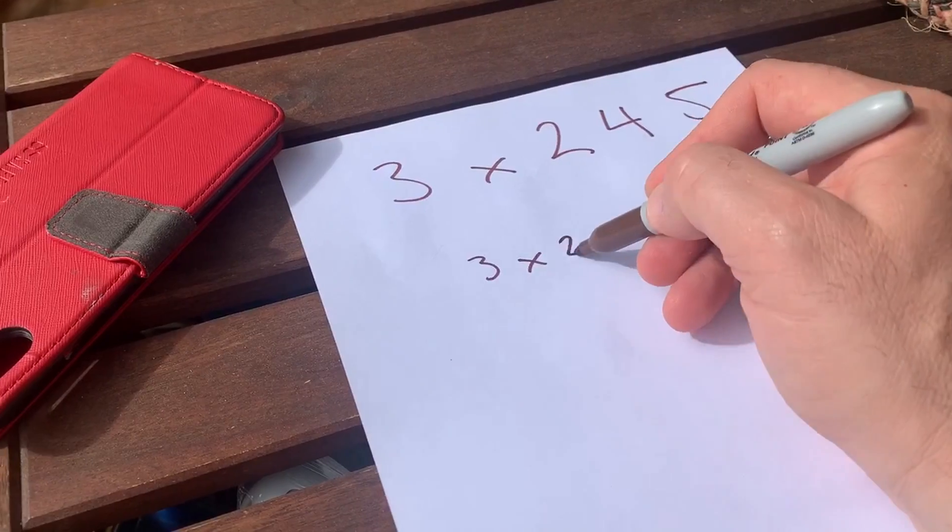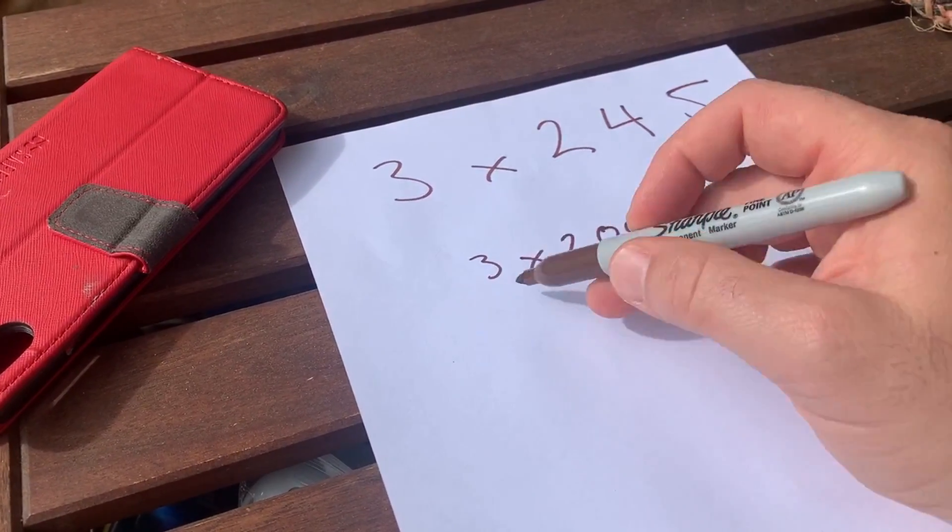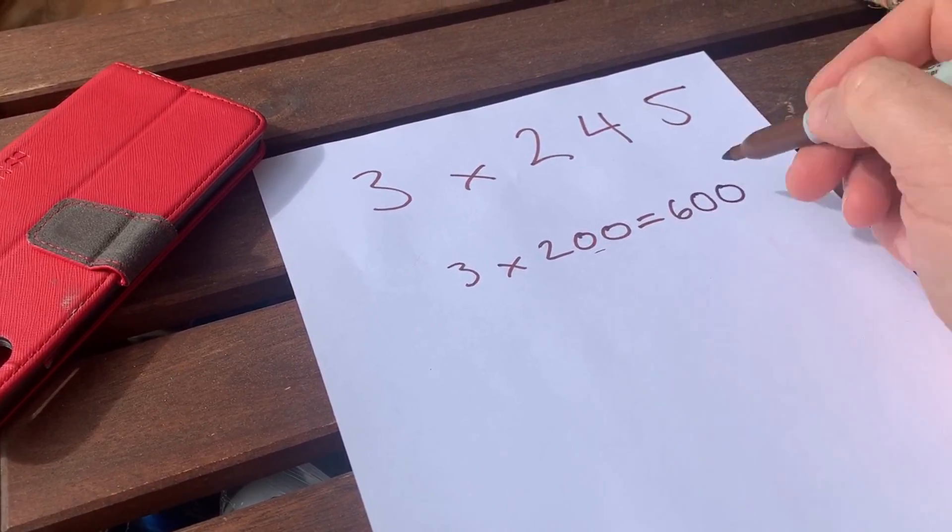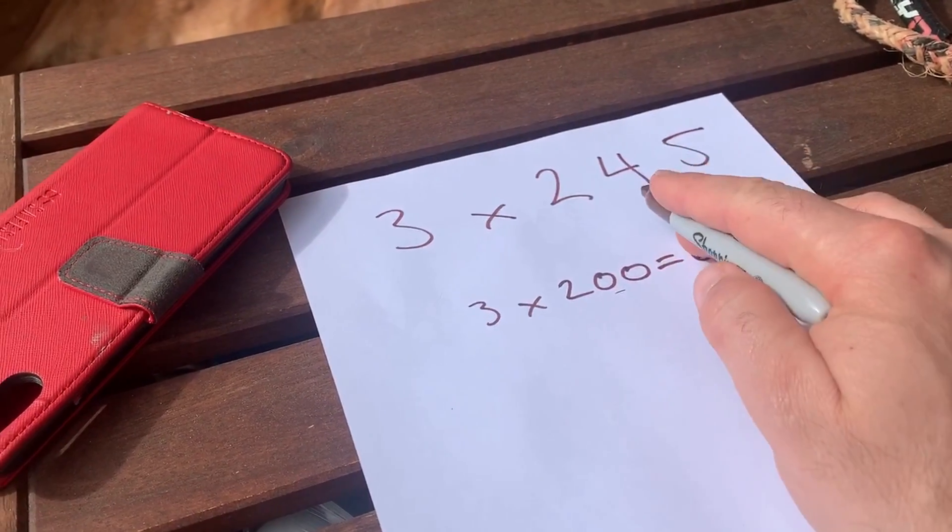And I know that 3 times 2 is 6, and I can put my two zeros on the end. So 3 times 200 is 600. I need to know what 3 times 40 is.